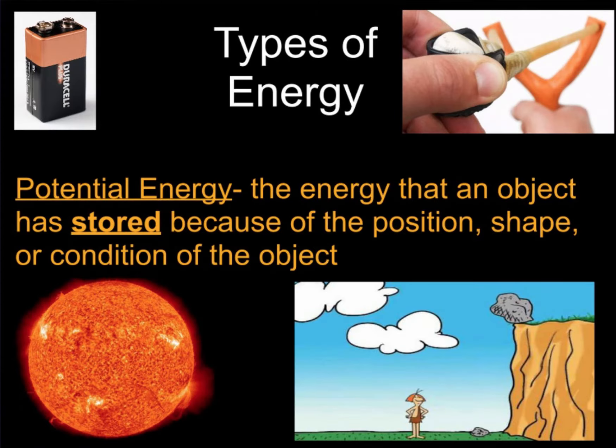Potential energy is the energy that an object has stored because of its position, its shape, how it maybe is smushed together or pulled apart, or its condition. It might just be the properties of something, the stuff it contains. These things are what affect its stored energy, or potential energy.